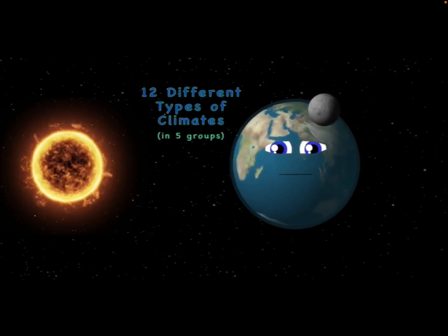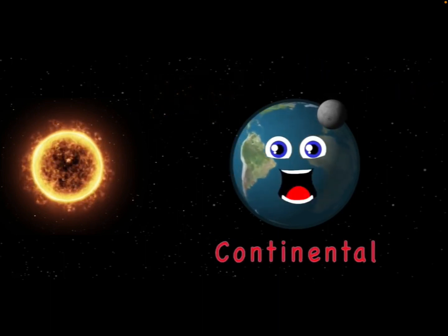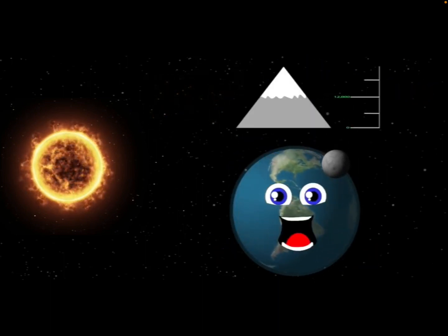There are 12 different types of climates that exist on me. Moderate, polar, dry and tropical are four groups you see. Then there is continental, it is one category. One climate in no group is highland where we are above the sea.